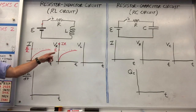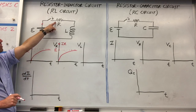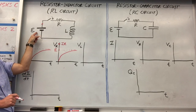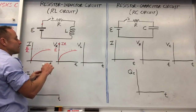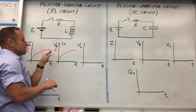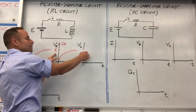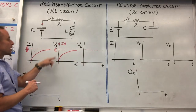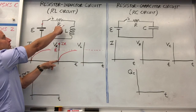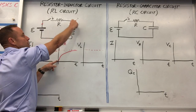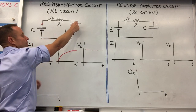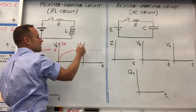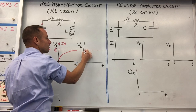The voltage drop across the resistor plus the voltage drop across the inductor has to add up to the battery voltage. So basically whatever the resistor doesn't have, the inductor is going to have. In the early going, if there's no voltage dropping across the resistor, it must all be dropping across the inductor. So the voltage drop across the inductor is going to start high and then come down low.